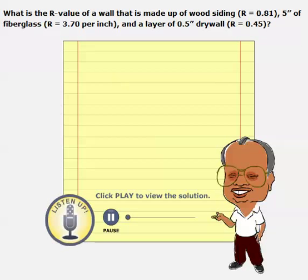Here we have again a wall made up of three different layers. The first layer is wood siding, which is outside. Its R value is given as 0.81, whatever the thickness might be of that wood siding.